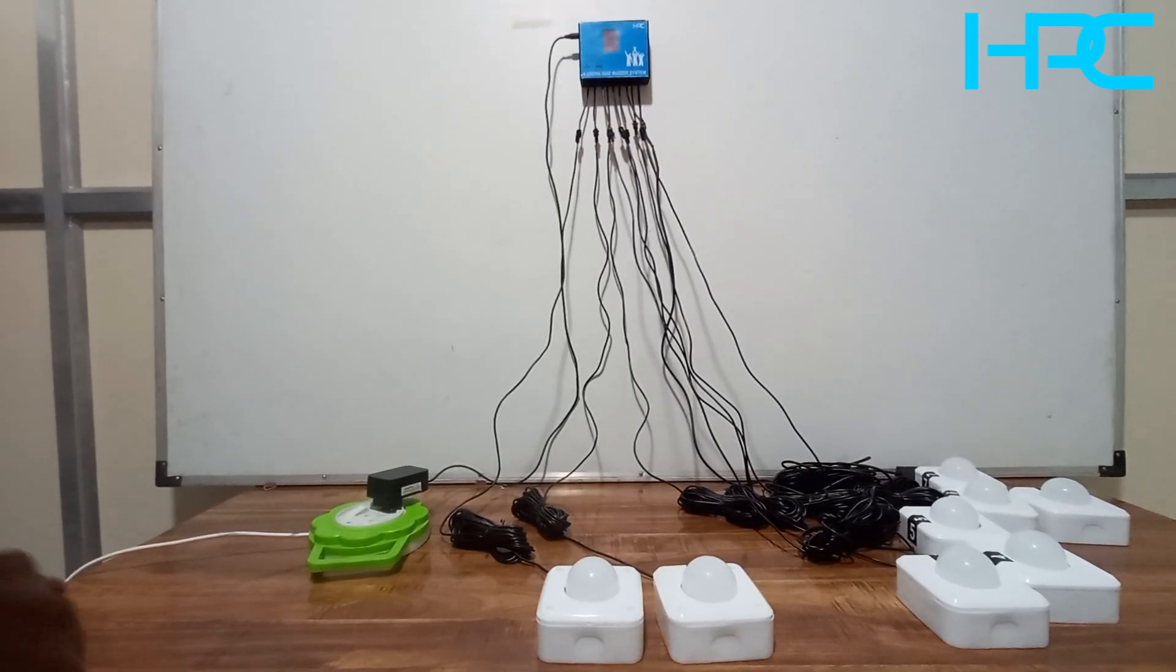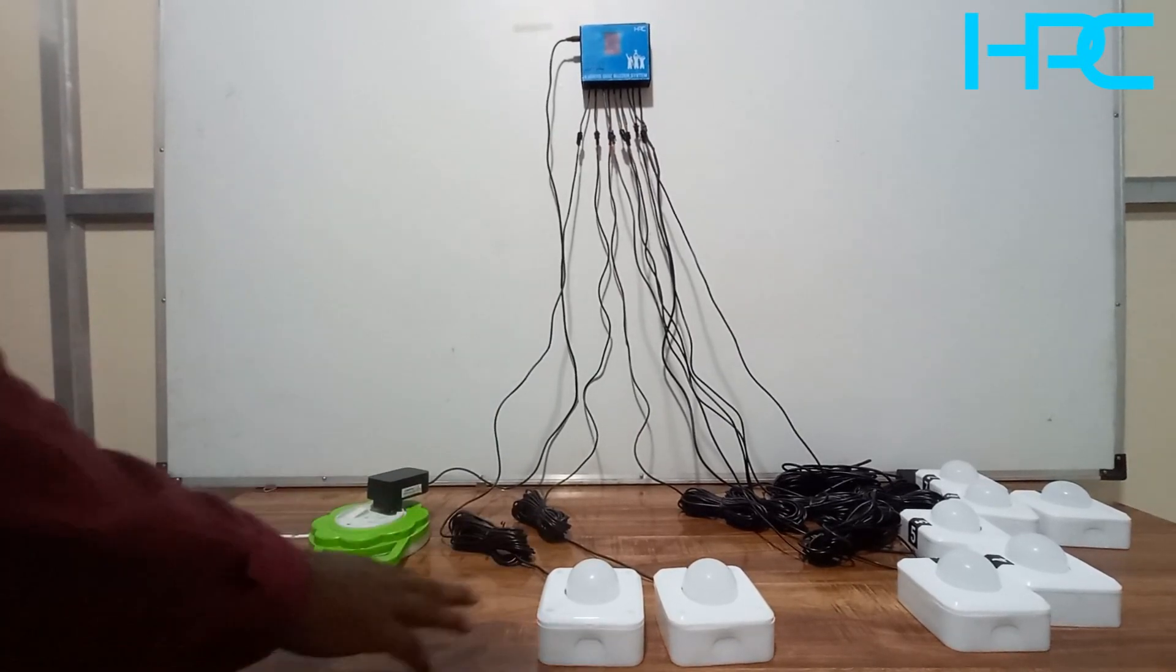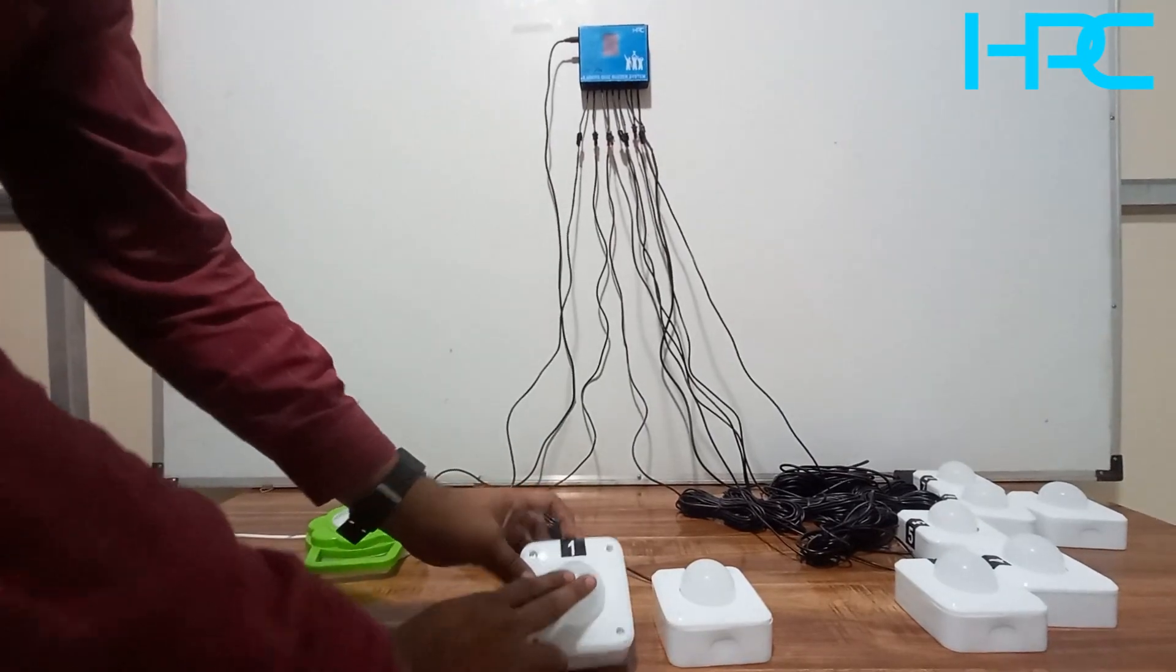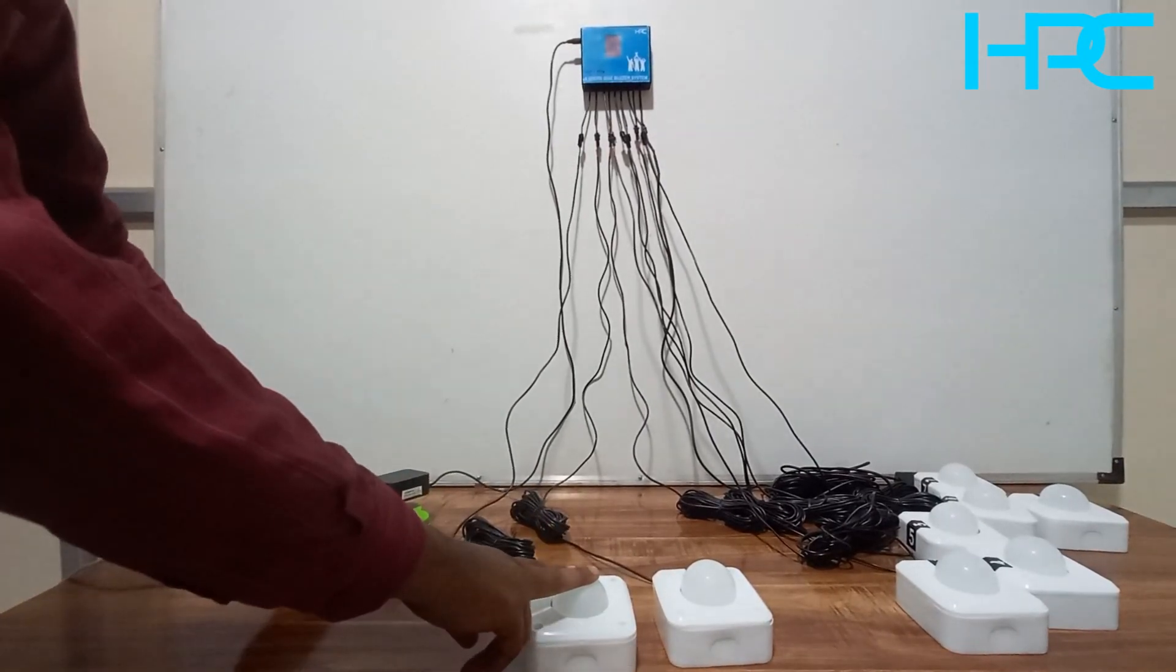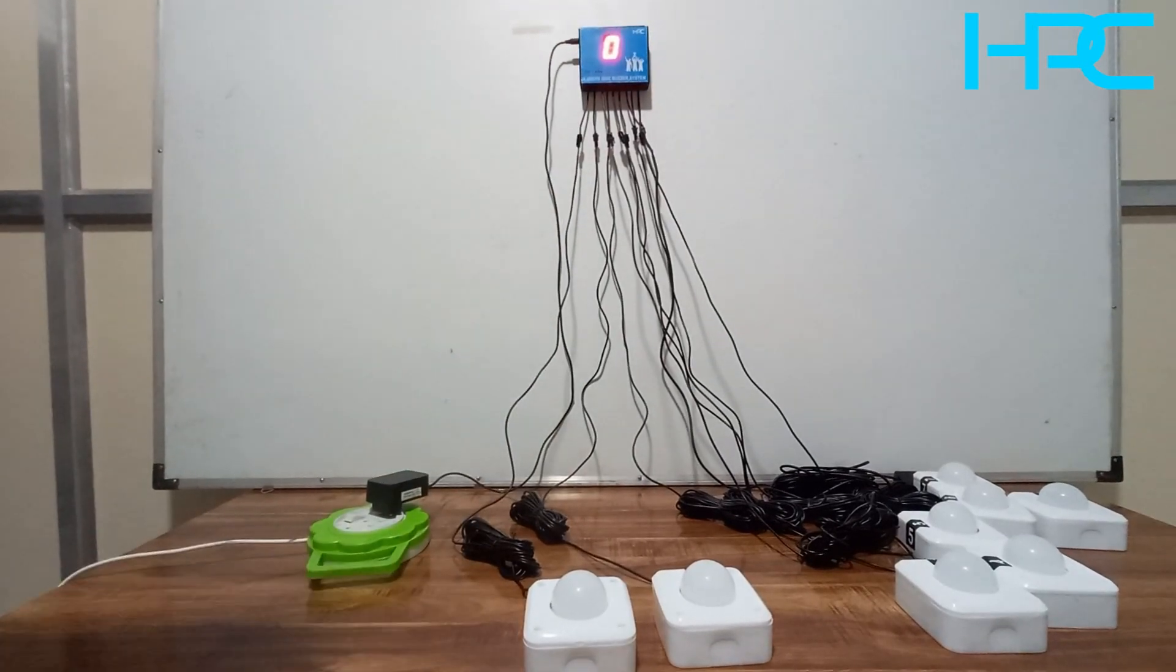This system has two operating modes. You will see how mode 1 operates. For mode 1, you have to press remote 1 and turn on the system. Number 1 blinks 3 times on the display, it means the system is in mode 1.